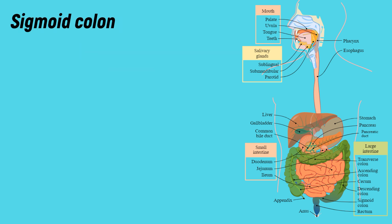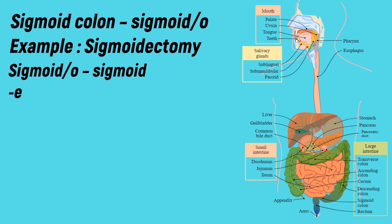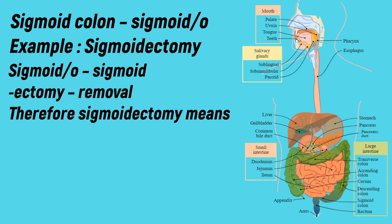Sigmoid colon: the medical term for sigmoid is 'sigmoido'. Example: sigmoidectomy. -Ectomy means removal. Therefore, sigmoidectomy means removal of the sigmoid.